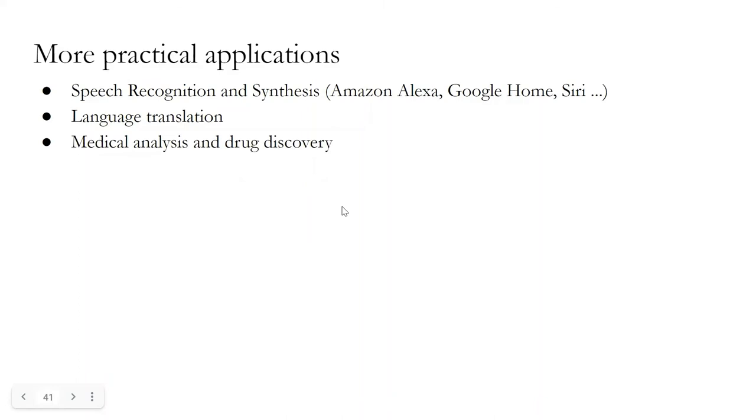I showed you a lot of games and cool applications, but there are also a lot of other practical applications which are money-making and more useful in industrial settings. For example, speech recognition and synthesis. We have amazing products like Alexa, Google Home, or Siri, which are getting better every year because of machine learning. We have language translation systems. Google Translate is almost perfect for English-French, for example, and they are able to support 100+ languages now. Simultaneous translation is picking up. Now you can speak something and simultaneously get translated and the other person will hear it in a different language. There's a lot of progress in medical analysis and drug discovery. We are able to bring down the entire drug discovery process from 10 years to two years or one year, all because of machine learning.